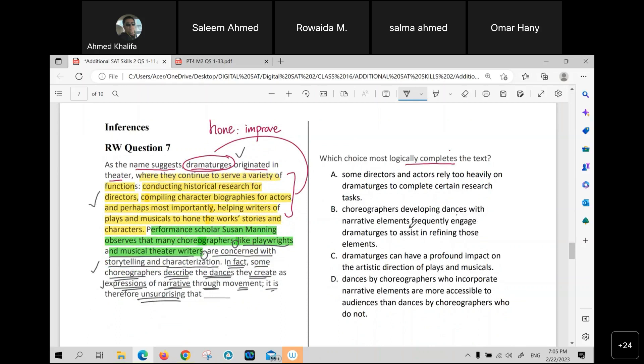Now, let us go for a P.O.E. Process of Elimination. A. Some directors and actors rely too heavily on dramaturgists to complete certain research tasks. Of course, this is wrong. B. Choreographers developing dancing, this is their job, with narrative elements, frequently engage dramaturgists to assist in refining those elements. What do you think of this one?